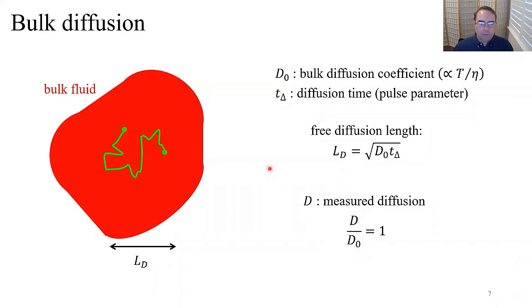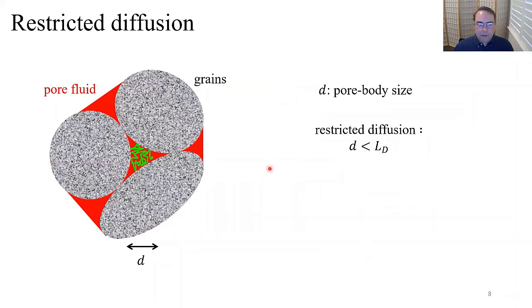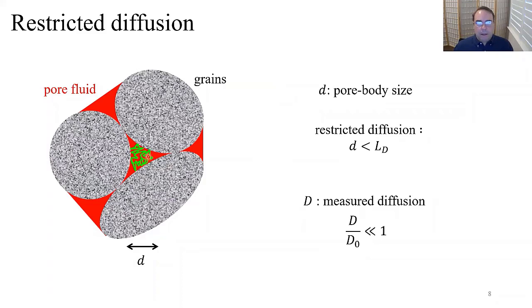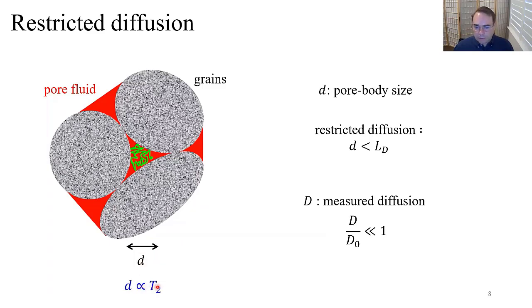When we confine the fluid, we have an illustration of pore fluid surrounded by grains with pore body size d. We have restricted diffusion because the pore size is less than the diffusion length, so the measured diffusion coefficient is much less than the bulk diffusion coefficient. In NMR we can determine pore size since pore size is proportional to T2.